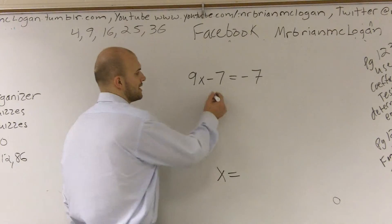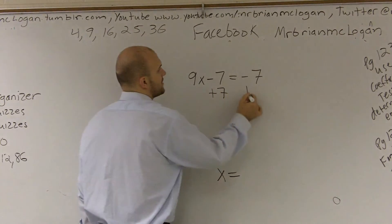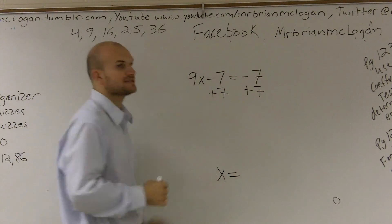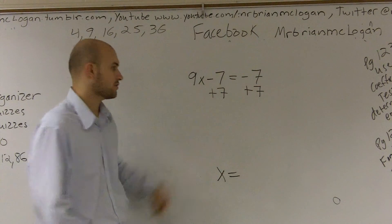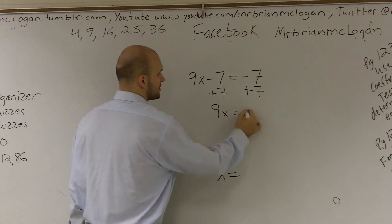So to undo that, I'm going to want to add a 7. The reason why I'm going to want to add a 7 is this cancels out to become 0. It also cancels out to become 0 over on this side. So I get 9x equals 0.